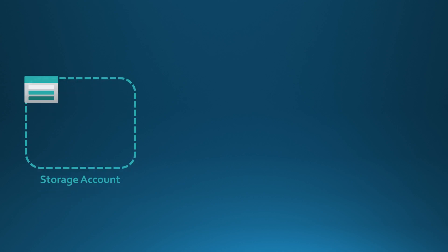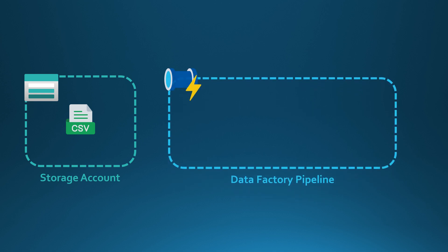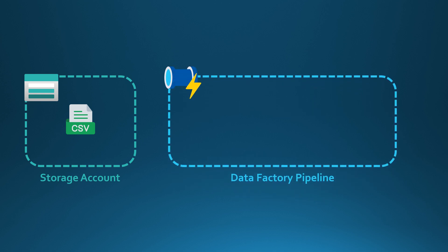So without further ado, let's dive into today's topic. Let's imagine a situation where we have a storage account, and in that storage account we have a CSV file. Then we have a Data Factory pipeline, and in that pipeline we have a copy activity that would copy the contents of this CSV file.